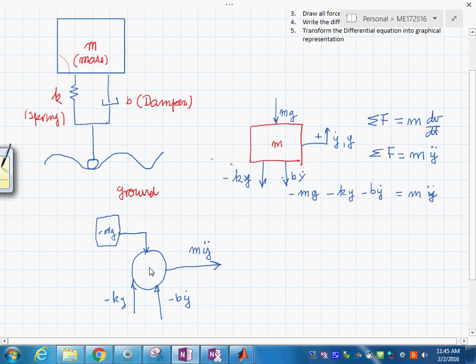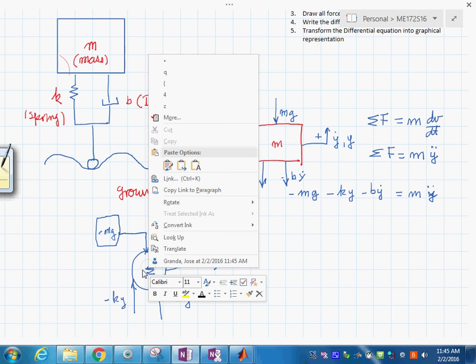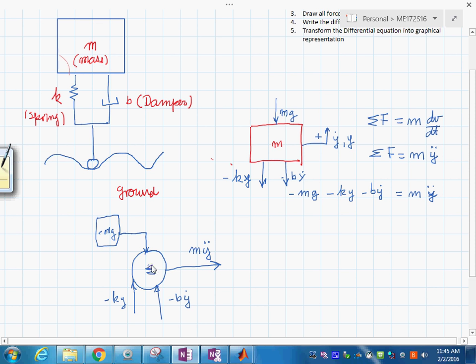And this one, minus b times y dot like this. And this whole thing equals to mass times the acceleration. So we have done this summation on the circle. We've used that symbol for the summation.